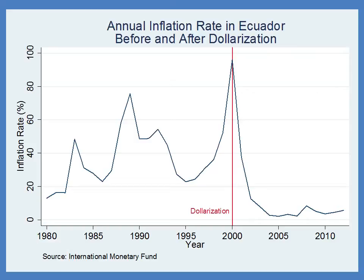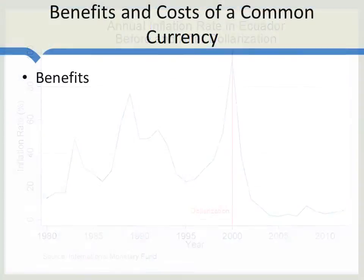Moreover, the inflation rate in Ecuador is no longer controlled by the Ecuadorian central bank — it's controlled by the Federal Reserve, the U.S. central bank. The Federal Reserve may be controversial in the United States, but on a world scale, it is a very high-quality institution. It's independent of politics and has managed to keep a low inflation rate by world standards. So it's a big improvement over the Ecuadorian central bank. One of the benefits of using the currency of another country is that if you choose a country with a better central bank, you're going to get a lower and more stable inflation rate, and that makes your own country's economy work better.